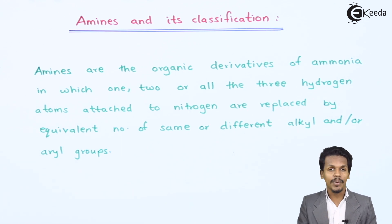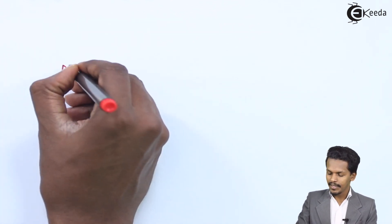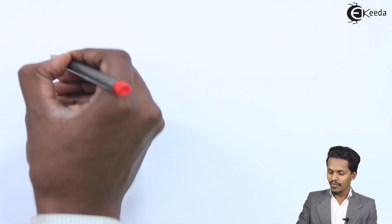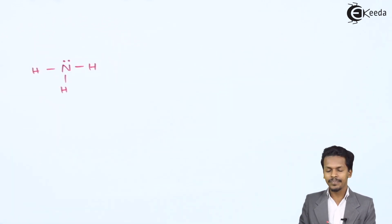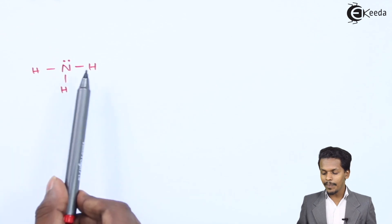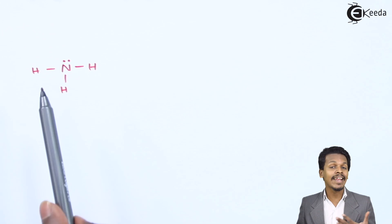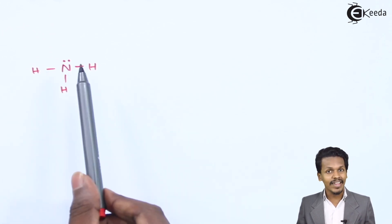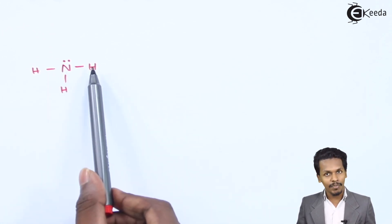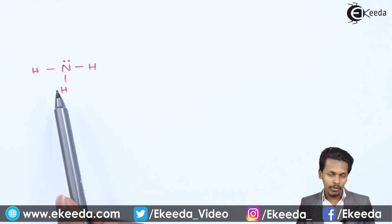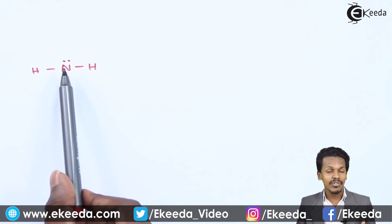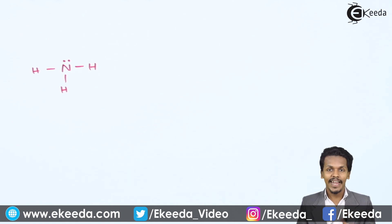After that we are also going to talk about the classification of amines. The structural formula of ammonia is NH3, and it has a lone pair of electrons. Suppose if we replace one hydrogen with an alkyl or aryl group, two hydrogens with an alkyl or aryl group, or both can also be present — one alkyl and one aryl group attached to the nitrogen atom — the product formed is basically known as an amine.